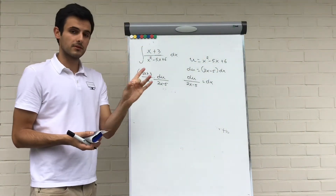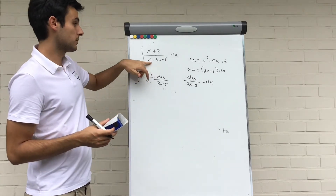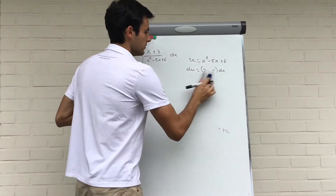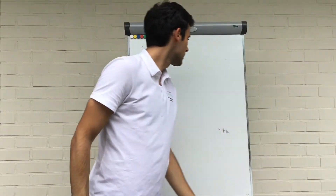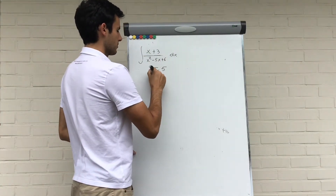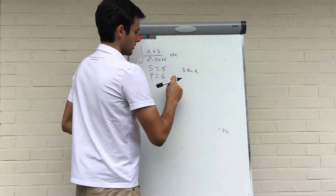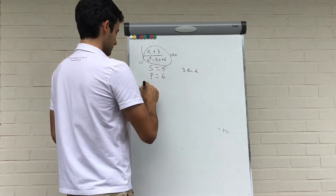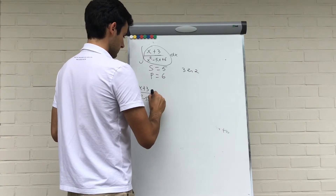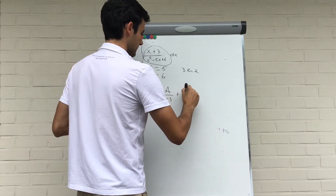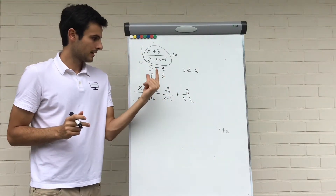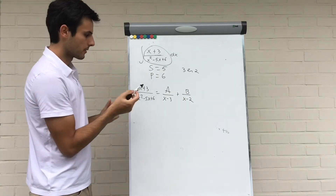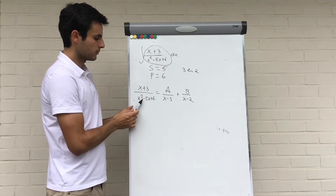The second option is splitting in partial fractions. We set the denominator equal to zero and use the sum and product method to find the zeros. Sum equals 5, product equals 6, so the solutions are 3 and 2 — you can use the discriminant as well and get the same solutions. Now we can rewrite the fraction as A divided by (x minus 3) plus B divided by (x minus 2), where A and B are constants we need to find. Note that (x minus 3)(x minus 2) equals x squared minus 5x plus 6.